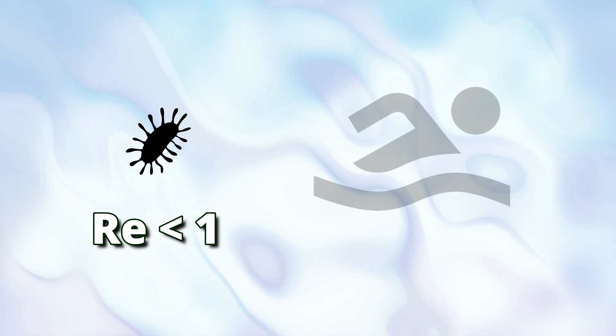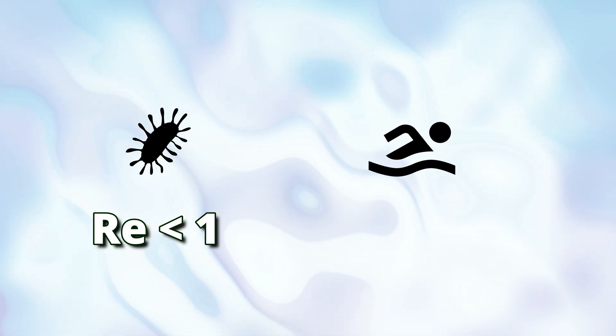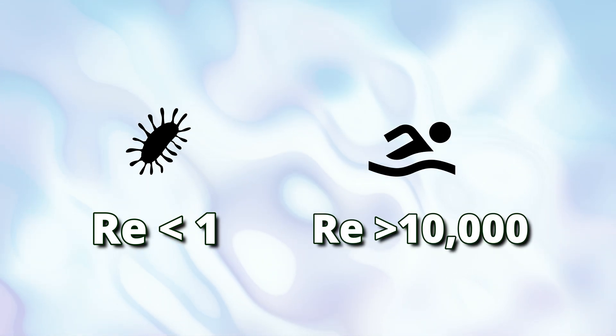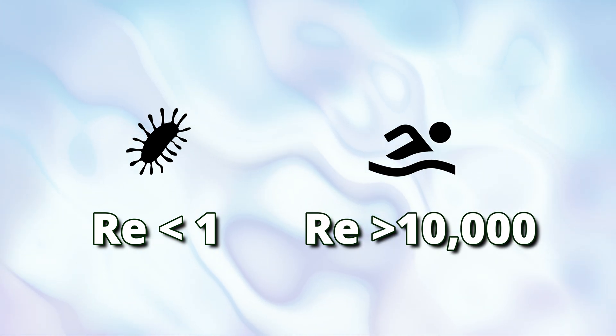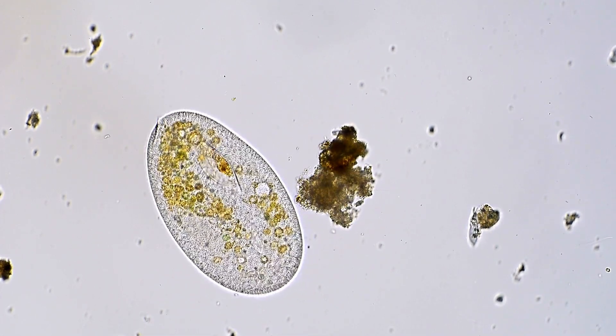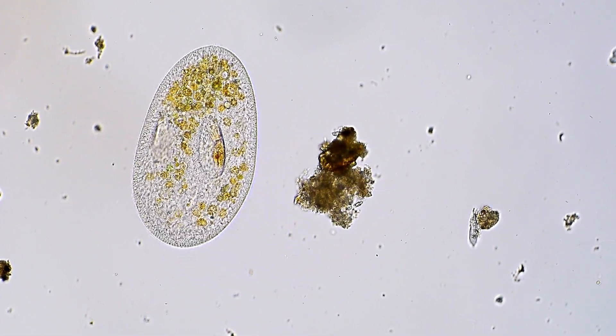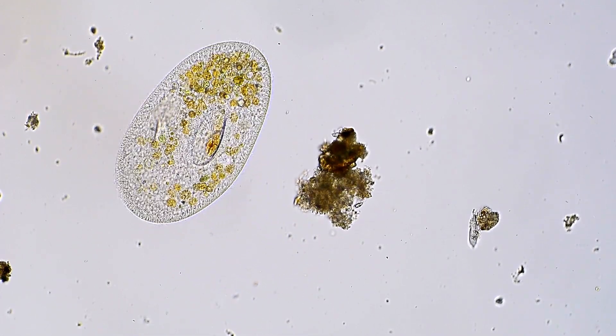For microscopic organisms, their tiny size is the dominant factor, making the Reynolds number very small. For humans, our much larger size increases the Reynolds number dramatically. But what do these numbers really mean? Let's visualize these two different worlds.